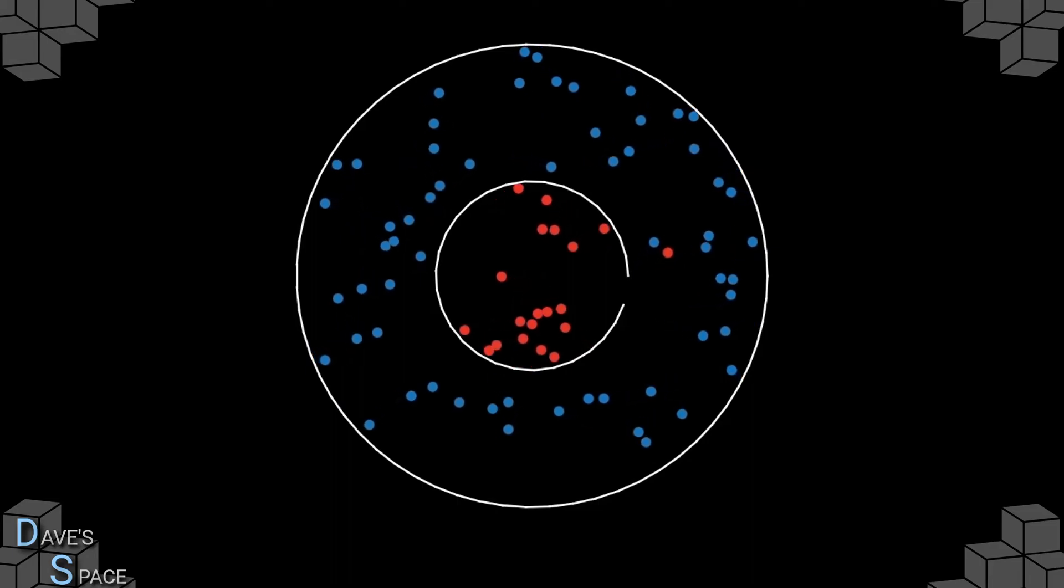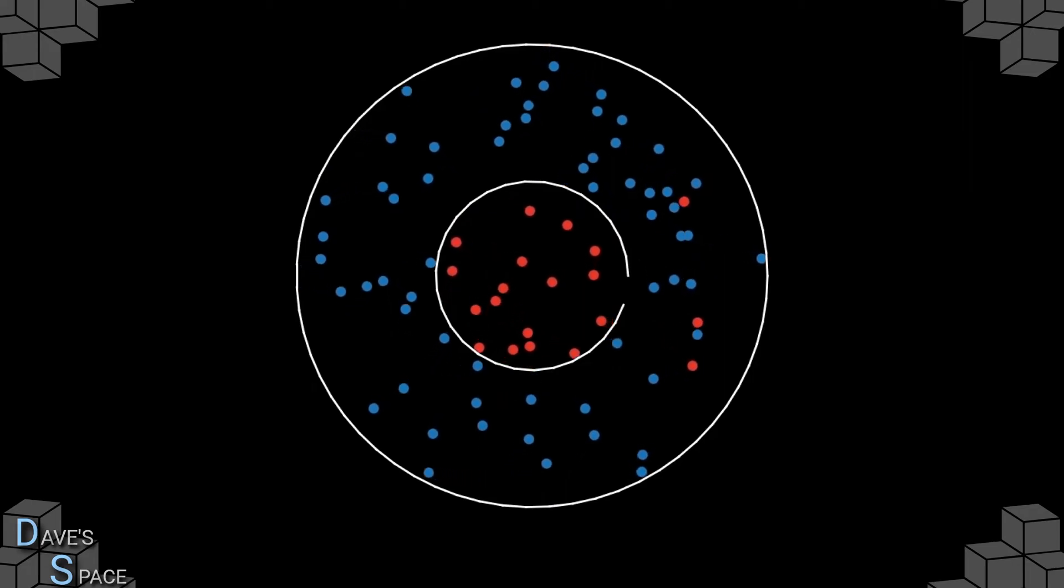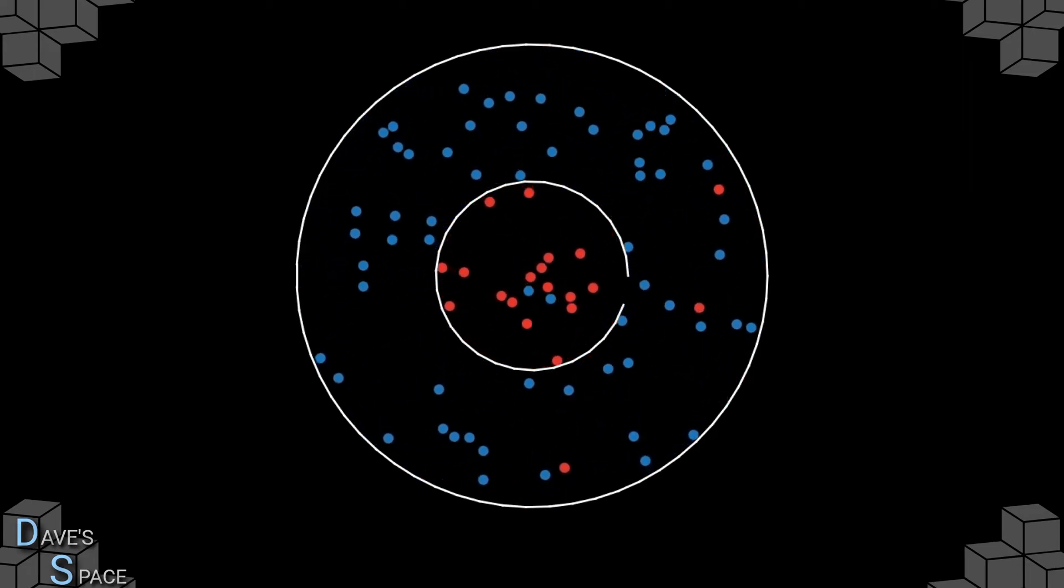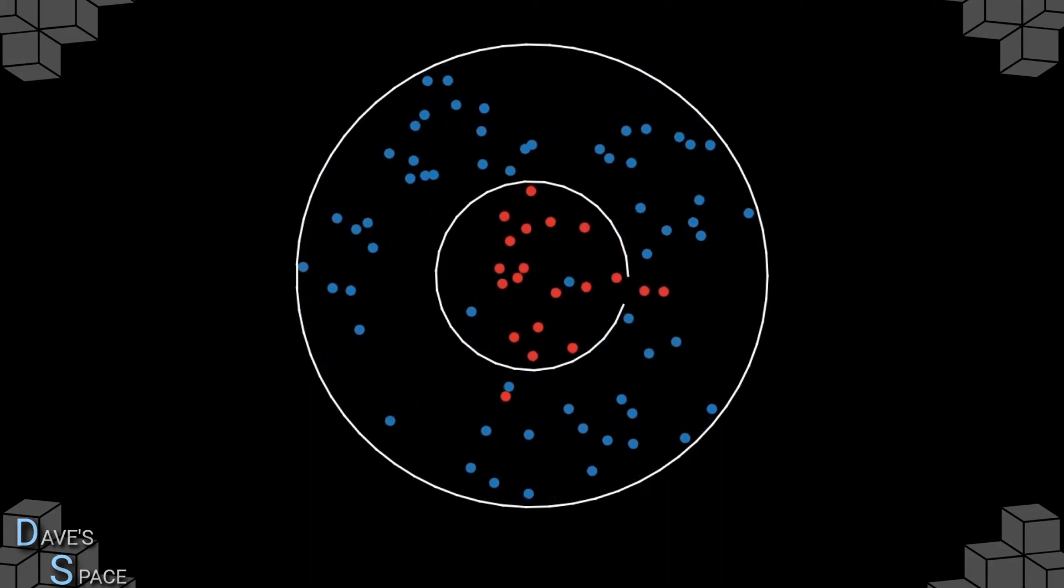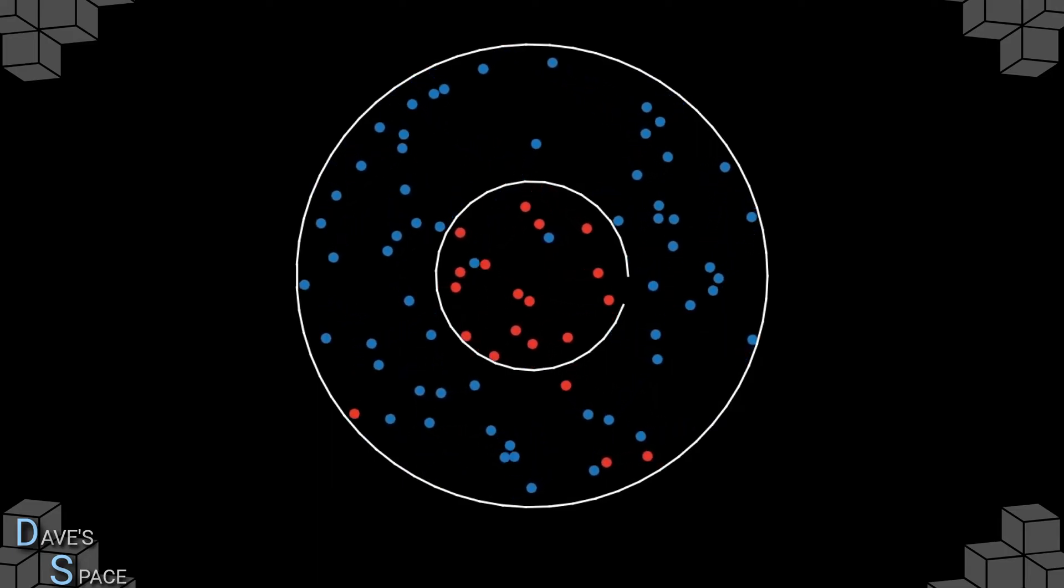The inner container contains more red particles, and so over a given period of time, it's more likely that a red particle will leave than a blue particle will enter. Complementary, the outer container contains more blue particles, and so it is more likely that a blue particle will enter the inner container.